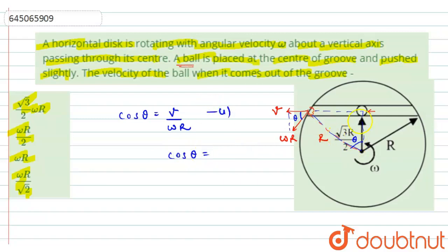So from this triangle, cos theta will be equals to root 3 r by 2 divided by r. So r and r will cancel out and we will get cos theta is equals to root 3 by 2.